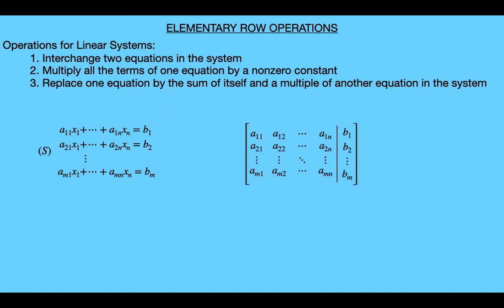Now what about if we consider the augmented matrix of this system? You can see that this augmented matrix contains all the important information about the system, and the notation is clearly more convenient than writing out this system every time. So naturally, we'll want to be able to solve systems using this notation. But in order to solve systems using matrix notation, we'll need to construct three new operations resembling these operations above, but where our new operations can be applied to matrices instead of linear systems. So for each of these three operations, we'll need a corresponding matrix operation that we can apply to the augmented matrix, and that will essentially make the same change to the augmented matrix as its corresponding operation above would make when applied to the linear system.